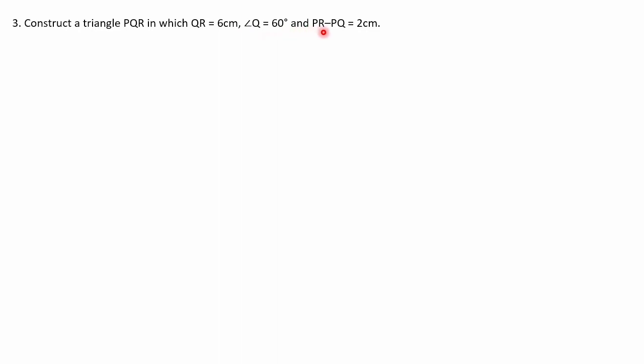Question number three: Construct a triangle PQR in which QR is equal to 6 cm, angle Q is equal to 60 degrees, and PR minus PQ equals 2 cm. QR is 6 cm, angle Q is 60 degrees, and the relation between PR and PQ — PR minus PQ — is 2 cm.